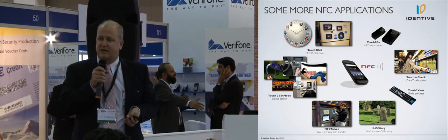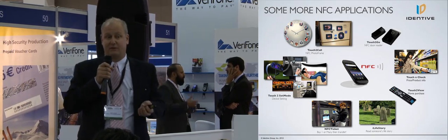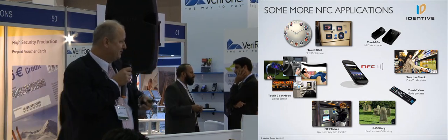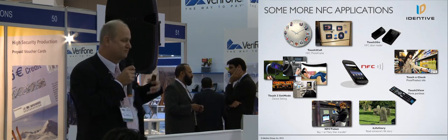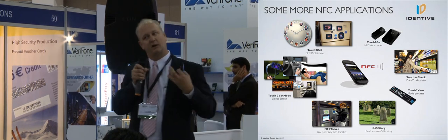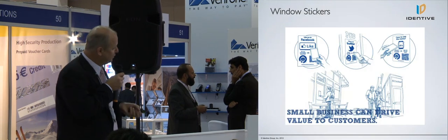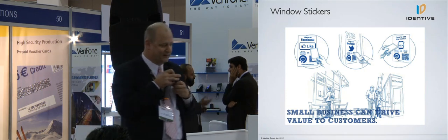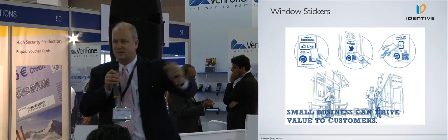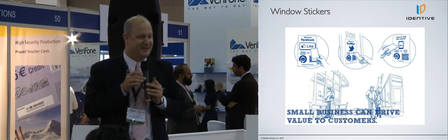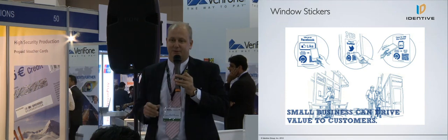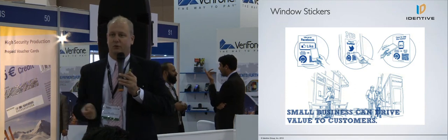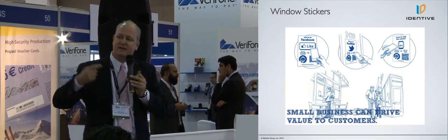One of our partners in Australia, called Tappet, is really innovating globally using window stickers and NFC stickers, enabling small businesses to drive customer value and get closer to their customers. We've done some wonderful window stickers - for example, a double-sided window sticker that enables the customer to check in at a shop using either a QR code or an NFC tag, taking them immediately to a URL where they can check in, find information, look at their location, and map it on Google Maps.